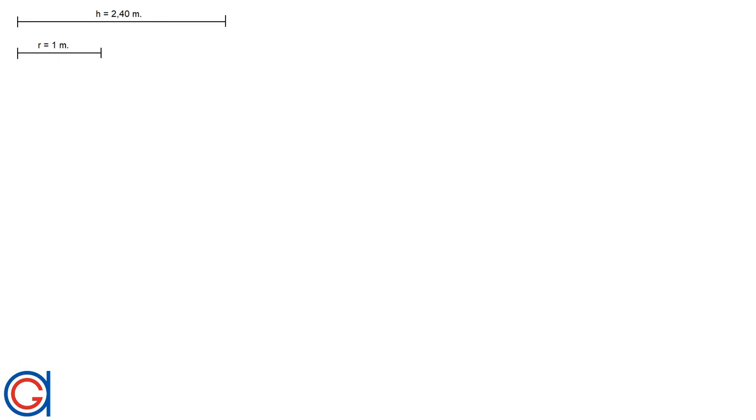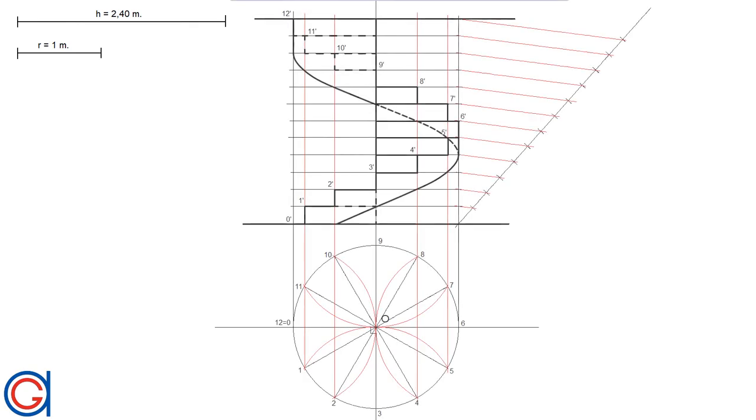Hello, today we are going to learn how to design a spiral staircase which fits between two floors 2.4 meters apart and with steps of 1 meter in width.